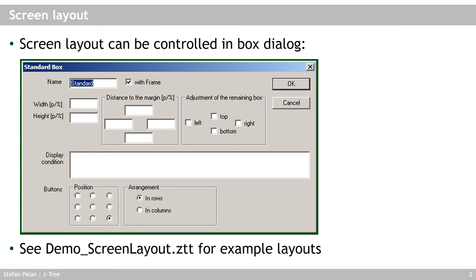We can set the width and height of the box, and we can specify these in pixels by using 'p' and in percent by using '%'. So if you write 50p, the box will be 50 pixels wide under all circumstances, irrespective of screen size. If you write 50%, the box will be scaled to half of the width of the current screen or screen area that the box is placed in.